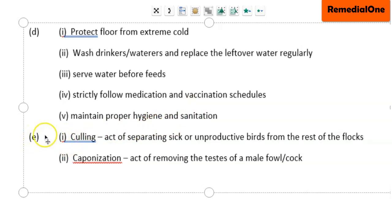Now let's go to question E. What is the meaning of the following terms as applied in poultry production? The first one is culling. Culling is the act of separating sick or unproductive birds from the rest of the birds or from the rest of the flock. So if you have any sick or unproductive bird, you separate it, and that act of separating these sick or unproductive birds is what we call culling in poultry production.